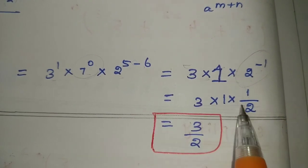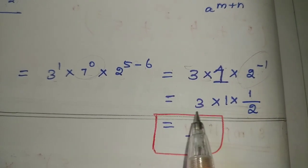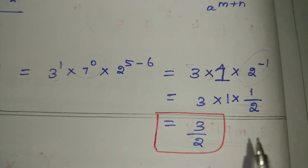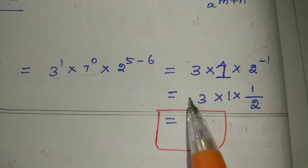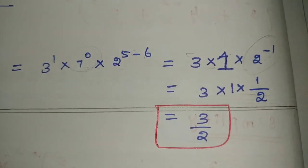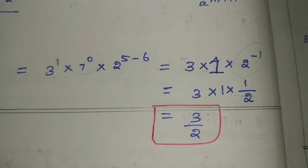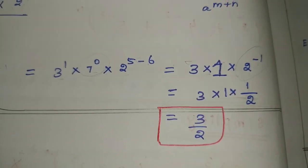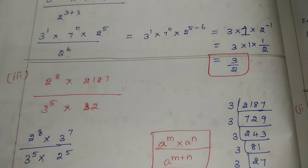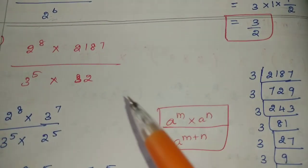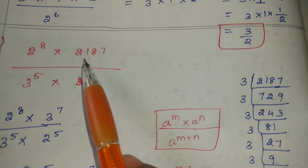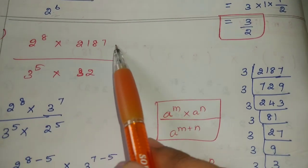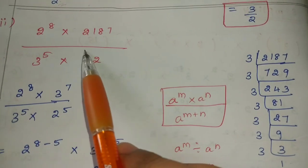3 into 1. Power minus: a power minus m is equal to 1 by a power m. So it is equal to 1 by 2. Clear: 3 ones are 3. So 3 ones are 3. The answer is 3 by 2.